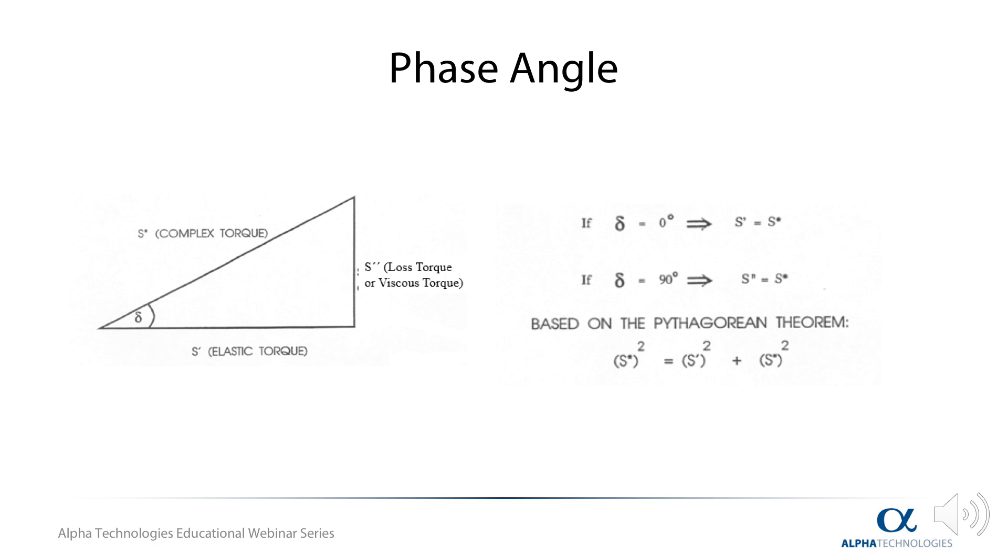The torque signal can be shown by the following vector, where the elastic torque and the viscous torque are 90 degrees out-of-phase. This is the angular difference, or lag, between stress and the sinusoidal applied strain. S prime, or G prime, is the elastic or storage component of the material. This determines the amount of energy stored in the material. This vector is in-phase with the strain position.